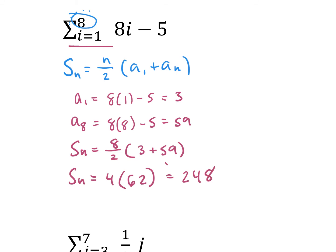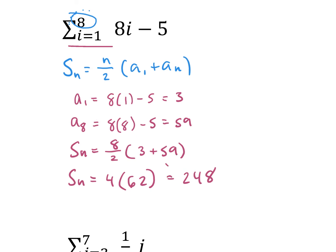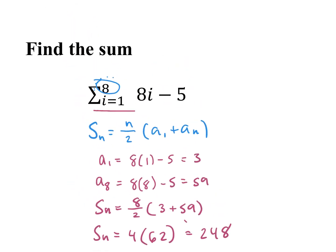4 times 62 is 248. We could also work this out by plugging in 1, 2, 3, 4, 5, 6, 7, and 8 — because 8 is our last number — and adding them all together. That would work too.